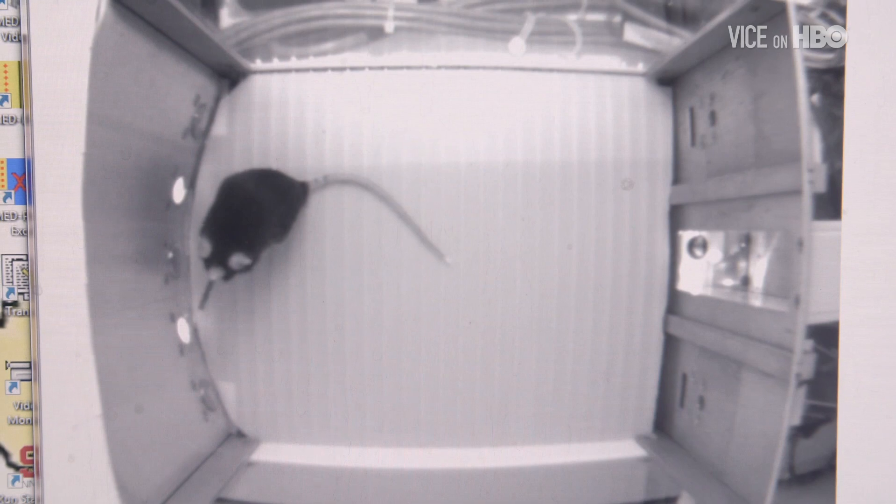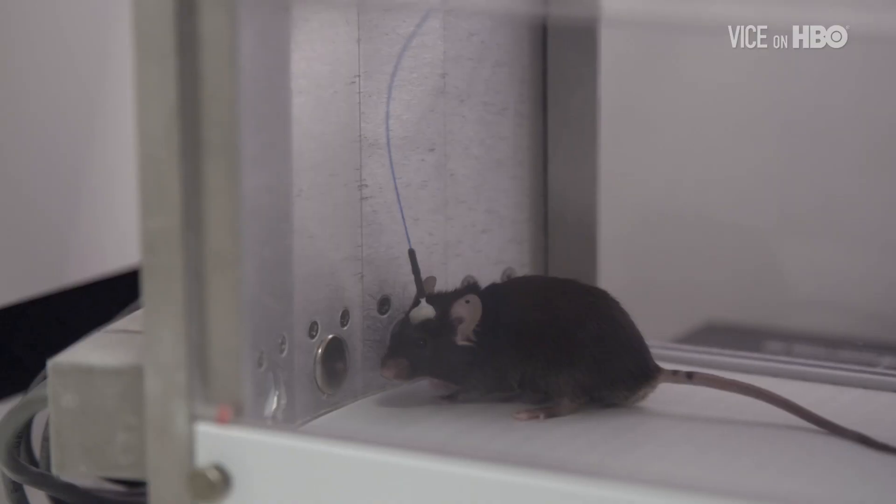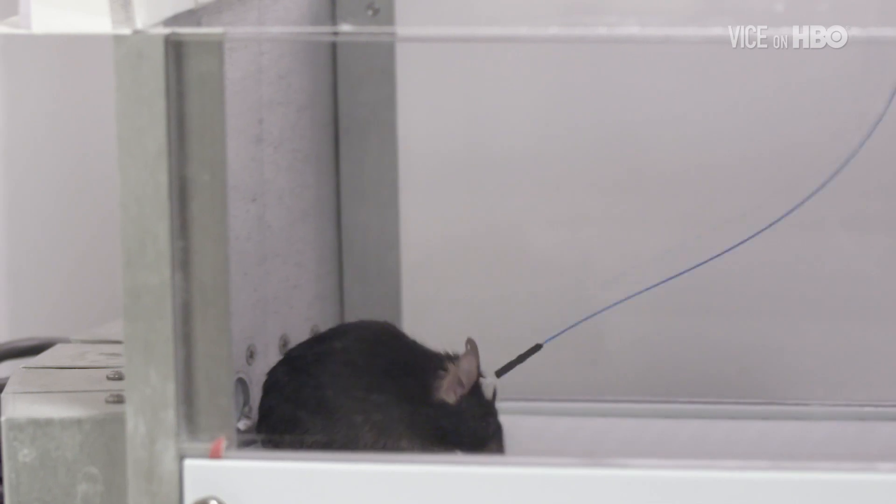So what does the mouse do? There are two holes in the side of the chamber. If he pokes his nose in the left one, nothing happens, and so that's our control. But if he pokes his nose in the right one, he'll get two seconds of dopamine neuron stimulation.